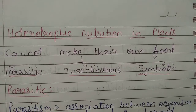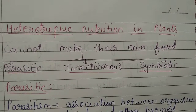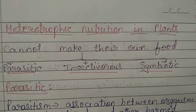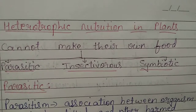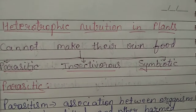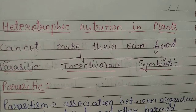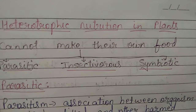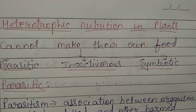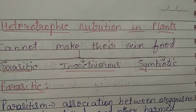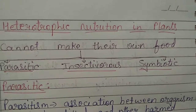Let us see heterotrophic nutrition in plants. Heterotroph means those who cannot make their own food and depend on other organisms or other living things for their food. Plants, though most of them are autotrophic in nature — they prepare and synthesize their own food.